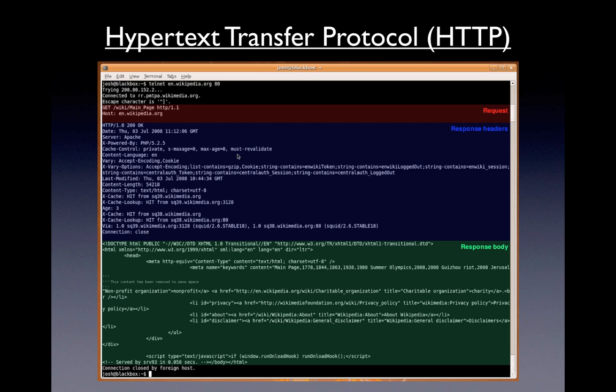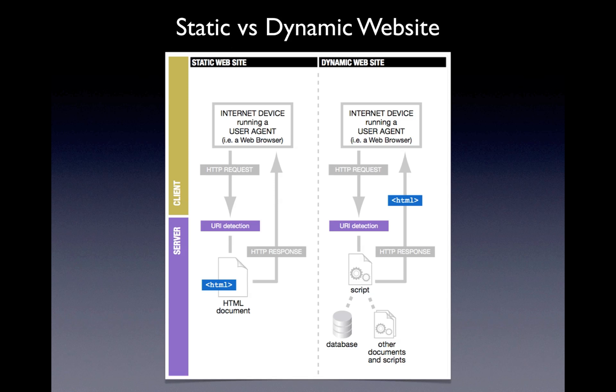In this case it's a successful request so as well as the response header it also returns the response body, which if you could read it, is what you see if you go and view the source of a web page — the response body contains the HTML. I just show this to show that it's not necessarily a simple matter of getting a file and sending it back. We have all this other information within the protocol. Don't worry though — we won't ever have to get that technical in our examples. This is probably the most important slide of the presentation: the difference between a static and a dynamic website.